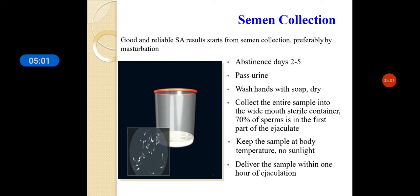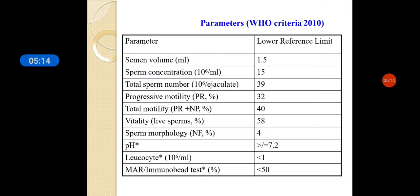The normal volume is more than or equal to 1.5 to 2 mL. The appearance is usually opaque gray-white, and it is initially viscous. The normal liquefaction time is 20 to 30 minutes. Normal pH is between 7.2 to 8 — it is basically slightly alkaline. Sperm concentration is normally more than or equal to 20 million per milliliter.